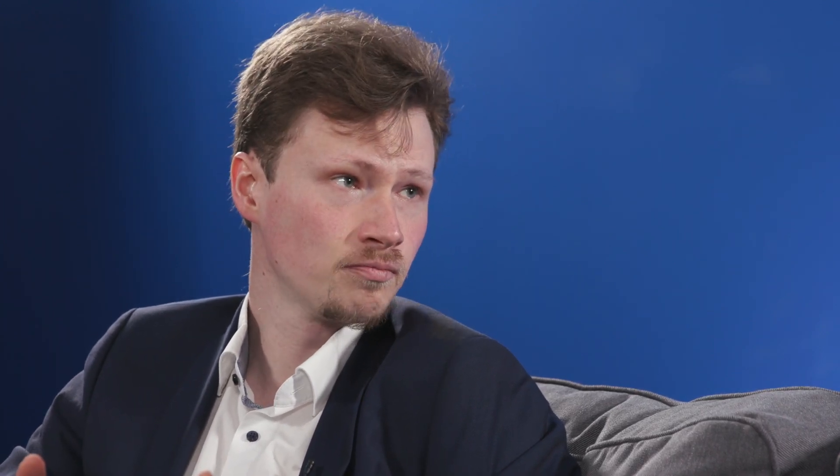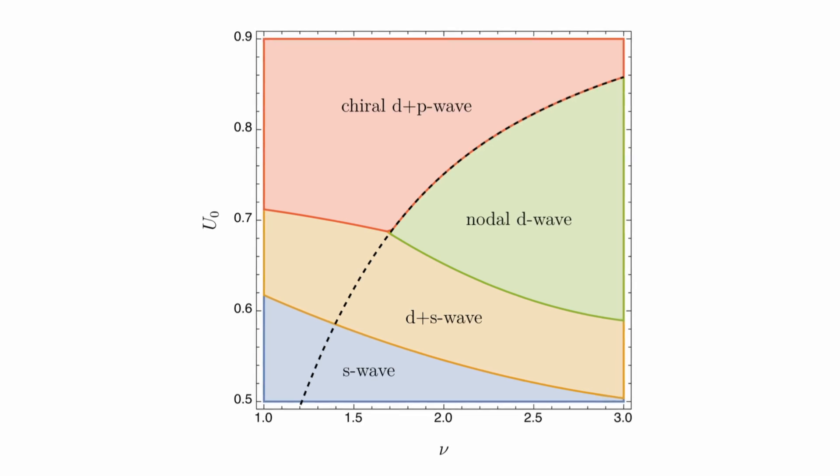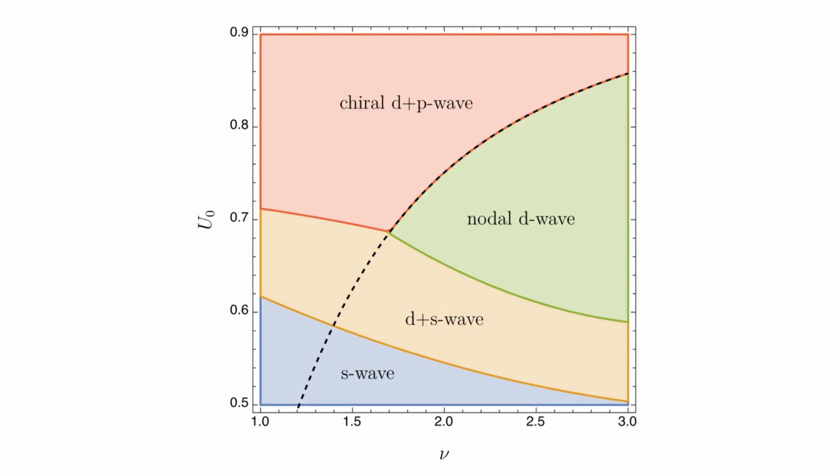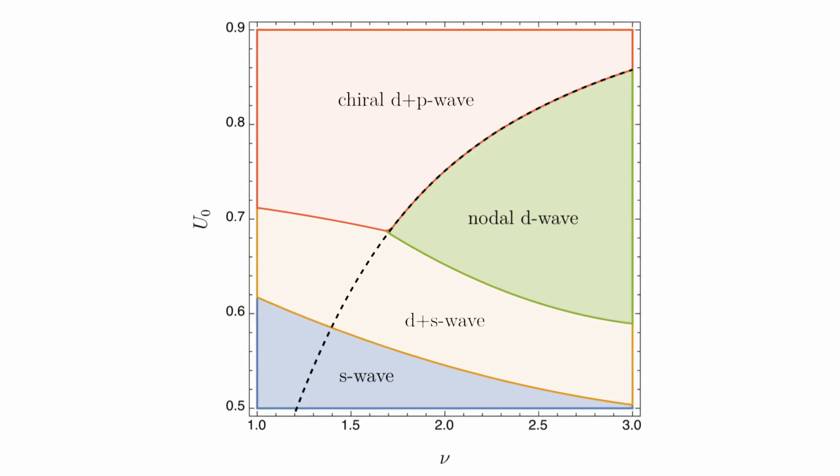Coming back to the actual physics — what exactly did you find with your method, and how important is it in the general context of superconductor research? We took into account more realistic interactions between electrons, and what we found is that in this phase diagram, we found actually two phases that we didn't expect at all. That might sound uninteresting — there are a multitude of phases, there are two new ones, why should we care? But imagine the comparison to water: you have the known phases of water, and now imagine you find a phase where water behaves completely differently than you'd expect. And that's the same for these superconductors.